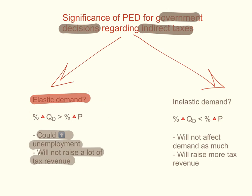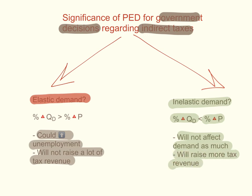However, for products with inelastic demand, the percentage change in quantity will always be less than the percentage change in price. This won't affect demand as much, so businesses can just pass on that indirect tax to the consumer in the form of a price rise. This will raise much more tax revenue, which is another reason why governments often tax products with inelastic demand.